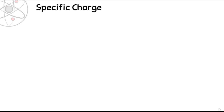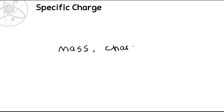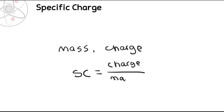In this video we're going to be talking about specific charge. Specific charge is a value or quantity that can be worked out for any particle that has, firstly, a mass, and secondly, a charge. So if a particle has these two values, you can work out the specific charge of it. Specific charge is defined as the charge that a particle has divided by its mass — it's a ratio of a particle's charge to its mass.